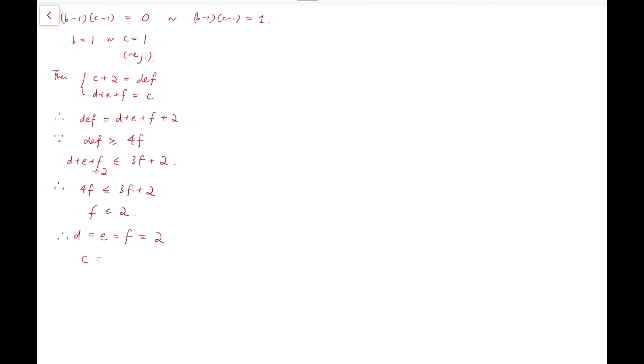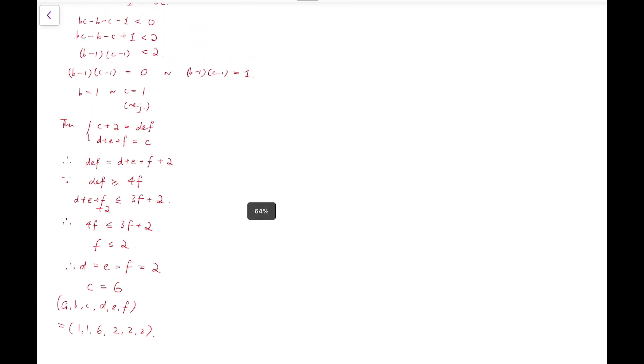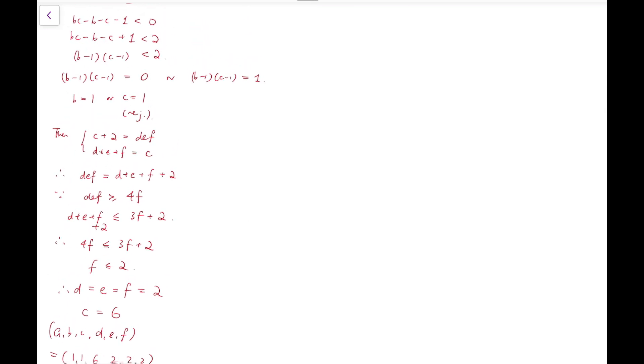And that will give us c equals to six. So our first solution set is 1, 1, 6, 2, 2, 2. Of course, you can reverse the order of a, b, c, and d, e, f, or you can permute a, b, and c, and also permute d, e, and f. But I will not give all the solution sets because that will take lots of time.